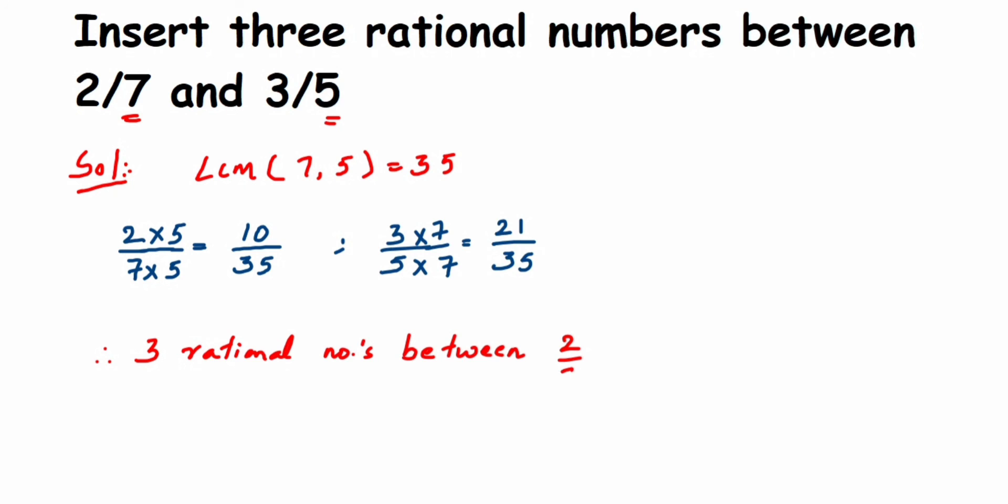I'm not going to take 10/35, instead I'm going to take 11 - don't include these two numbers. So I can write 11/35, this is one, then next is 12/35, and 13/35.